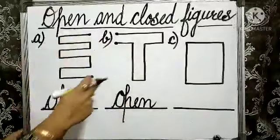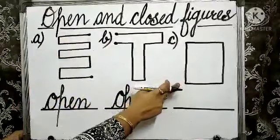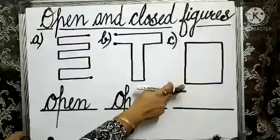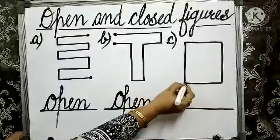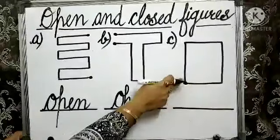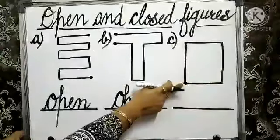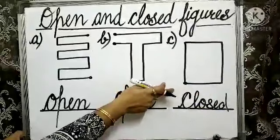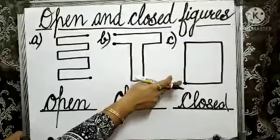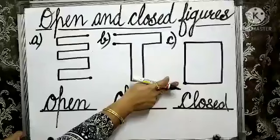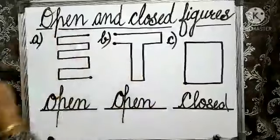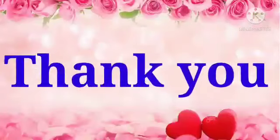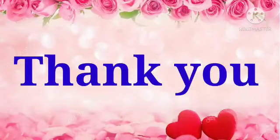Now move on to the last example. It is very simple — this figure starts from here and it also ends at the same point. Figures or shapes having the same starting and end point are called closed figures. Thank you, children. Enjoy learning.